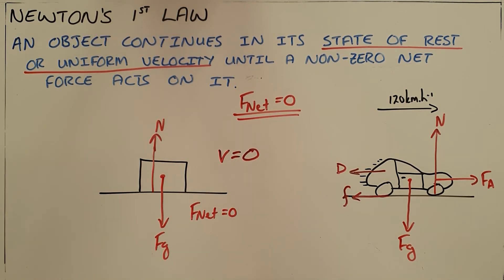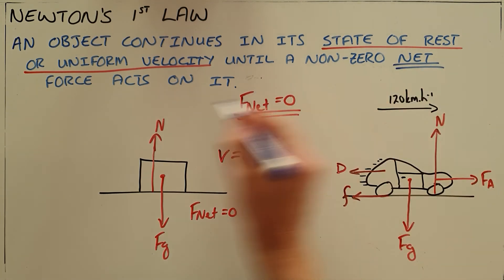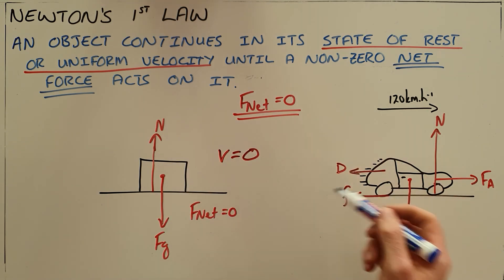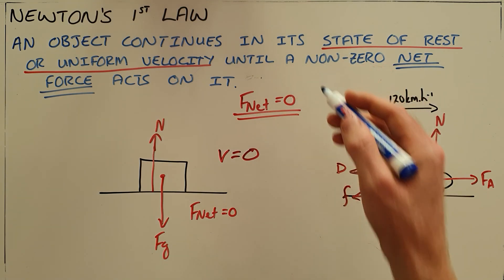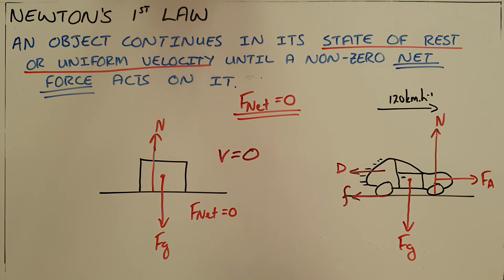It is very important when writing this definition to specify that it is a net force acting on the object because we can very clearly see that there are a number of forces acting on both of these objects and that has no impact on the state of motion. The impact is had or made by the net force specifically.